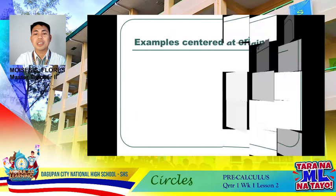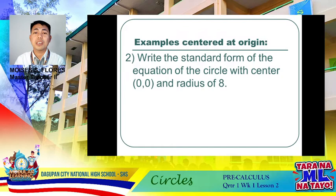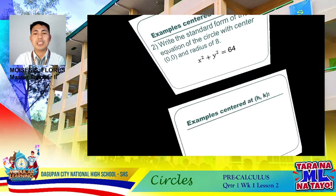Let's have another one, still centered at the origin. Write the standard form of the equation of a circle with center at the origin and a radius of 8. The answer is x² + y² = 64, because R = 8 and 8² = 64.